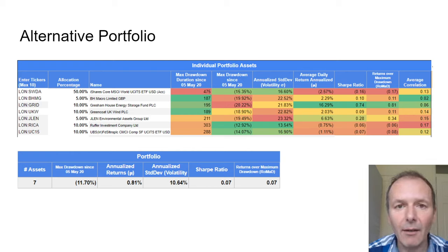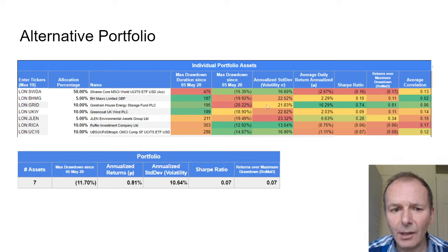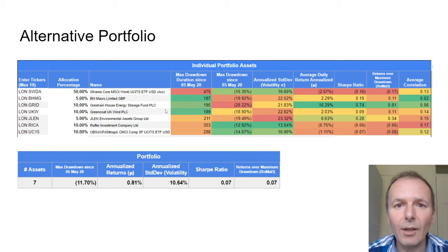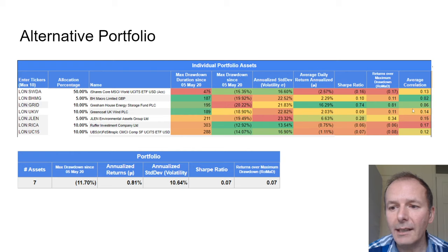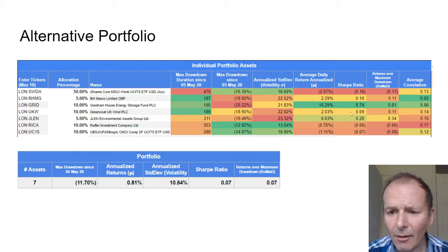Looking at other asset types with decent numbers, the best one was Gresham House Energy Storage Fund — pretty phenomenal returns because there's a shortage of storage capacity in the UK and with high energy prices it did very well. I wouldn't necessarily buy it today as it's already gone up a lot, but it's something uncorrelated with potentially decent returns. Then there's Greencoat UK Wind — again uncorrelated and positive returns.